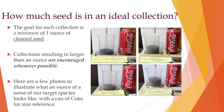So how much seed is in an ideal collection? The goal for each collection is a minimum of one ounce of clean seed. Thoroughly cleaning, testing, cataloging, and handling the seed is very time-consuming work, and our partners at Mason State Nursery recommend that a collection result in at the very least one ounce of clean seed. Collections resulting in larger than an ounce are definitely encouraged whenever possible. Here are a few photos to illustrate what an ounce of a few of our target species looks like, with a can of pop for a size reference.